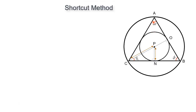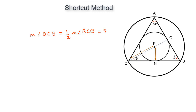This is the shortcut method to solve this problem. The median OC of the equilateral triangle is also its angle bisector at angle C. Therefore, angle OCB equals half of angle ACB, which equals 30 degrees.